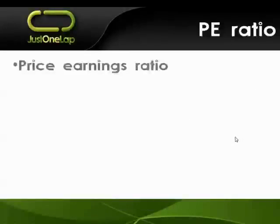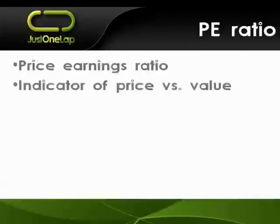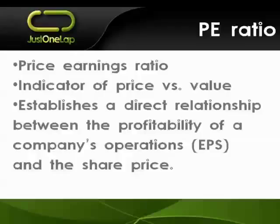First, on basics: PE ratio is literally the price earnings ratio. It's an indicator of price versus value. Price is what you pay, value is what you get — as Warren Buffett always says. A company is worth X, but the price changes minute by minute, day by day, while the value changes more slowly as they grow businesses, gain clients, lose clients, or shrink. It's one of the best ways to find a direct relationship between the profitability of a company — that's earnings per share — and the share price.